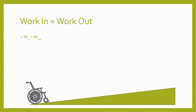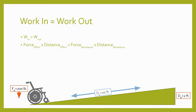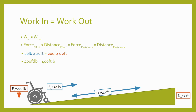Since work is equal to force times distance, this formula can be expanded so that the effort force times the effort distance equals the resistance force times the resistance distance. When we substitute the forces and distances needed to lift a wheelchair user up an inclined plane, we find that with or without the simple machine, 400 foot-pounds of work are required. Without the inclined plane this means exerting 200 pounds of effort force to lift the person 2 feet straight up. But with the inclined plane the effort force is reduced to 20 pounds and the effort distance is increased to 20 feet, making the work much easier.